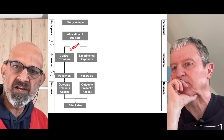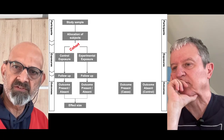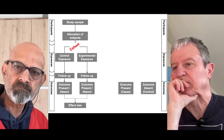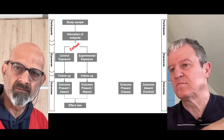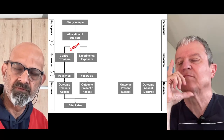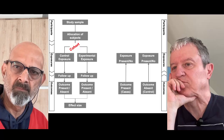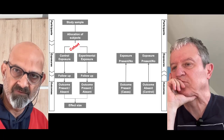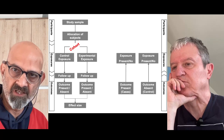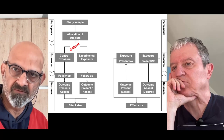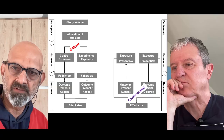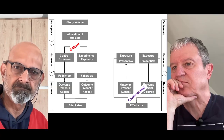In comparison, when the starting point is the outcome, we have cases with the outcome and controls without the outcome, and we go back in their history — back in time — to examine whether they were exposed or not. With this information, we calculate the effect. This is the case control design.